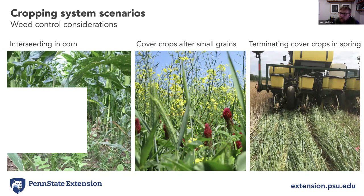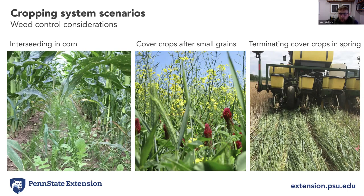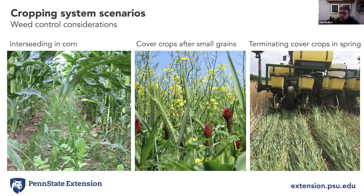I'm going to cover a couple different cropping system scenarios and walk through considerations for weed control and herbicide programs that help facilitate the integration of cover crops in different phases of the rotation. I'll talk about our experience with interseeding in corn and how to design a herbicide program for that. A lot of what we've learned about carryover injury of herbicides to cover crops would also transfer to thinking about post-harvest seeding. Then I'll cover considerations for longer growing season windows after a small grain phase, and finally some considerations for terminating winter-hardy cover crops in the spring.